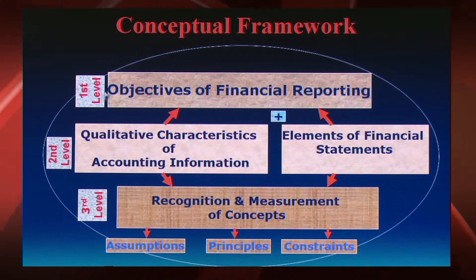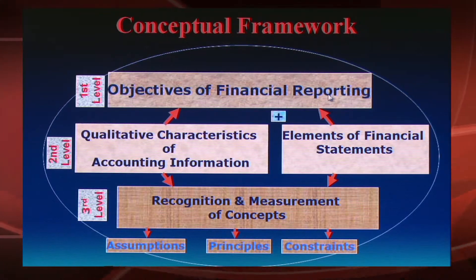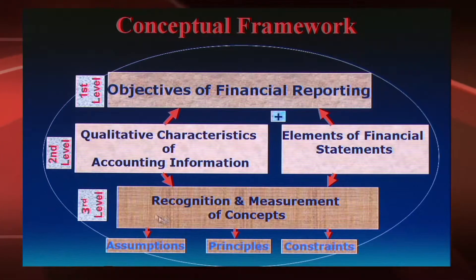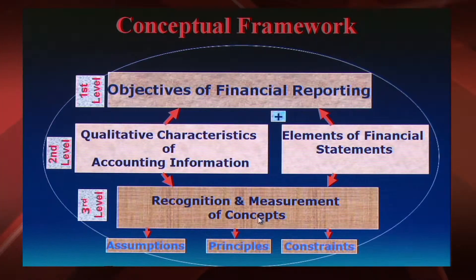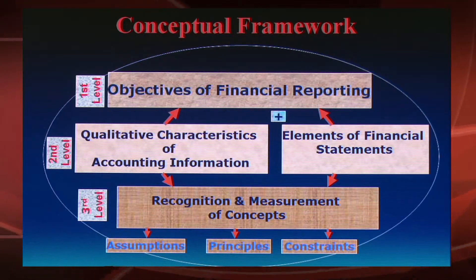Now I show you the overview of conceptual framework of accounting. You see in the screen, the conceptual framework of accounting has three levels as per the Financial Accounting Standards Board. The first level relates to objectives of financial reporting — that is, it explains the why: the goals and purposes of accounting. The second level relates to qualitative characteristics of accounting information and the elements of financial statements, and links the first level with the third level. The third level — recognition and measurement concepts — comprises the assumptions, principles and constraints of accounting, and describes the how: the implementation of accounting rationality.